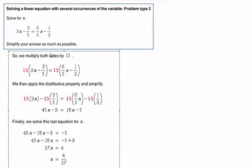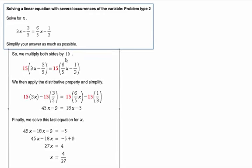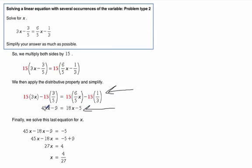Okay. So here's how you should have worked it out. Finding the least common multiple of 15, we multiply everything by 15. And we should have gotten this equation: 45x minus 9 equals 18x minus 5. Solving that. Subtracting an 18x from both sides. Adding a 9 to both sides. Dividing by 27. Our final answer: 4 over 27.